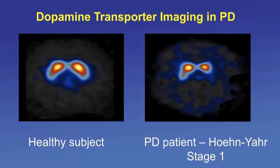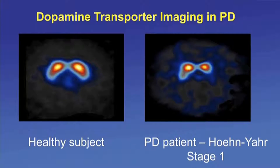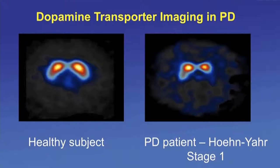On the left is a normal DATScan image showing good, symmetrical isotope uptake. On the right is an early-stage Parkinson's patient with less isotope taken up, because the isotope binds to a dopamine transporter receptor — if presynaptic neuronal capacity is lost or dopamine cells are lost, uptake is reduced. The DATScan is abnormal in Parkinson's patients but also in some other diseases.